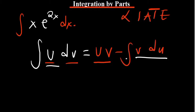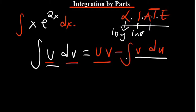We give priority to u using the mnemonic AOIATE — which you can pronounce as ARIATE. This guides you: the A stands for logarithmic functions, the I stands for inverses, A stands for algebraic functions, T for trigonometric functions, and E for exponential functions.